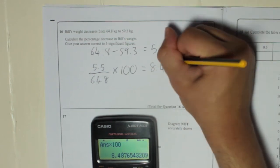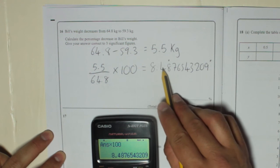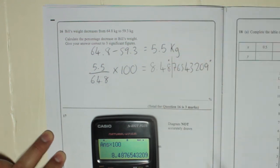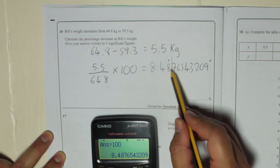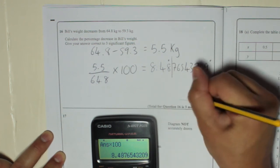And that bit's recurring from the 8 up to the 9. But the question says three significant figures. So 1, 2, 3. Chop that off there. 7 is big. So we're going to round 8 up to 9. So it's going to be 8.49%.